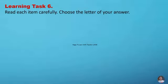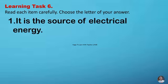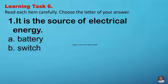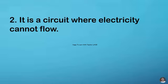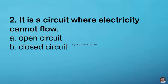Learning task number six. Read each item carefully. Choose the letter of your answer. Number one. It is the source of electrical energy. A. Battery B. Switch C. Wire D. Bulb. Number two. It is a circuit where electricity cannot flow. A. Open circuit B. Closed circuit C. Battery D. Switch.